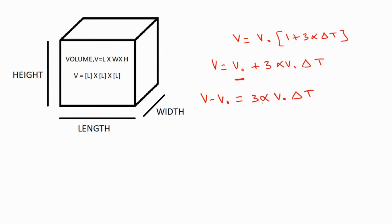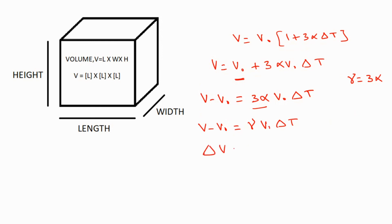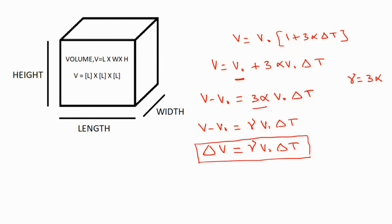Here the term 3 times alpha is 3 times the linear thermal expansion coefficient. We replace 3 alpha with gamma, so gamma equals 3 times alpha. The equation then becomes V minus V0 equal to gamma V0 delta T. Since V minus V0 is exactly equal to delta V, therefore delta V equal to gamma V0 delta T. This is our expression for volume thermal expansion.